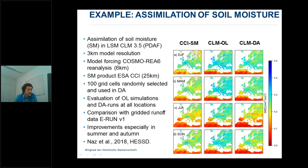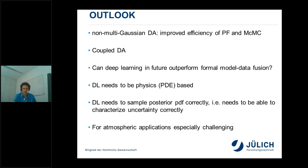As an outlook: non-Gaussian data assimilation is of high interest for the future. People are working on improved efficiency of particle filter methods and Markov chain Monte Carlo methods. The point will be reached where these methods become efficient for high-dimensional problems — first particle filters, and probably later MCMC methods, which would be the solution closest to Bayes' law with the fewest approximations. Coupled data assimilation will also be an important issue given the coupled models and multi-physics problems.